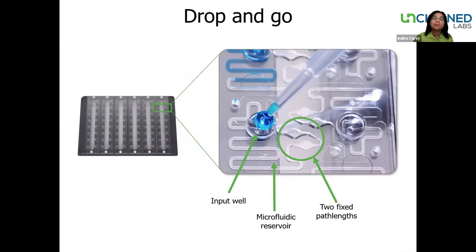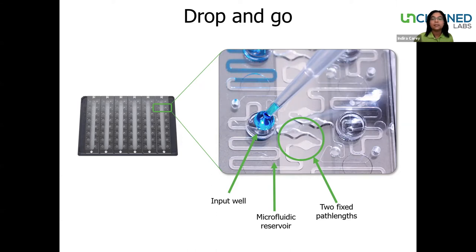So how does our Big Lunatic do all this? Big Lunatic is the only system out there that can measure nucleic acids at high throughput and high concentration. The microfluidic circuit with two fixed path lengths, as you can see highlighted here, covers a wide dynamic range from 0.03 up to 275 OD.